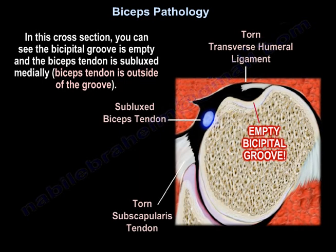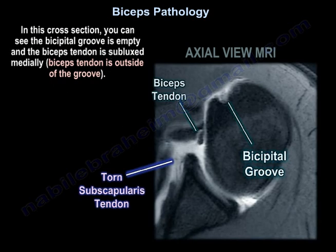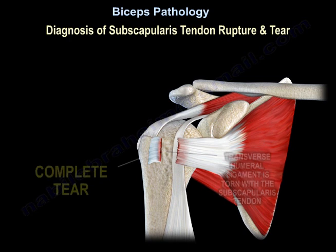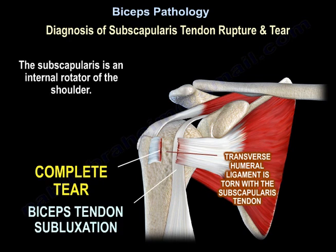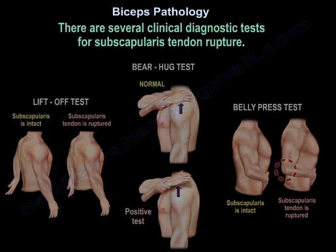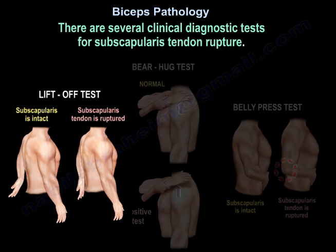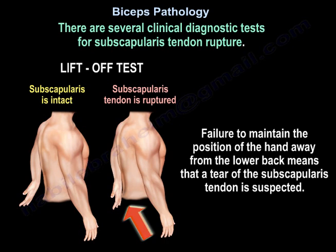In this axial MRI view, the bicipital groove is empty and the biceps tendon is subluxed medially outside the groove. The subscapularis is an internal rotator of the shoulder. There are several tests for the subscapularis. The lift-off test is used to diagnose the presence of a subscapularis tendon tear — failure to maintain the position of the hand away from the lower back indicates a suspected tear of the subscapularis tendon.